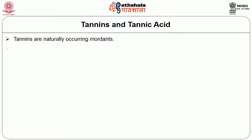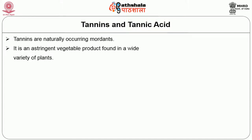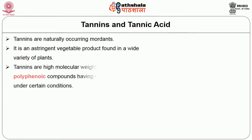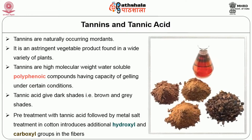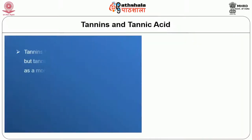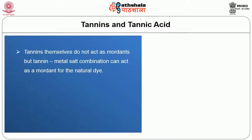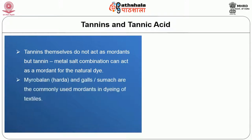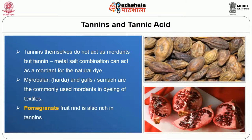The second category is tannins. Tannins are naturally occurring mordants. They are astringent vegetable products found in a wide variety of plants — high molecular weight, water-soluble polyphenolic compounds having the capacity to gel under certain conditions. Tannins give dark shades, i.e. brown and grey shades. Pre-treatment with tannic acid followed by methyl salt treatment in cotton introduces additional hydroxyl and carboxyl groups in the fibres. Tannins themselves do not act as mordants, but a tannin-methyl salt combination can act as a mordant for natural dye. Myrobellin and gall or sumach are commonly used mordants in dyeing of textiles. Pomegranate fruit rind is also rich in tannins.